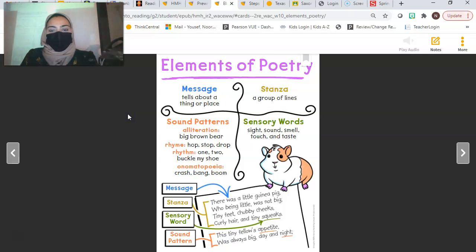We are going to be focusing on elements of poetry. When I pull this up, elements means parts of. So, the parts of poetry. What makes up a poem?